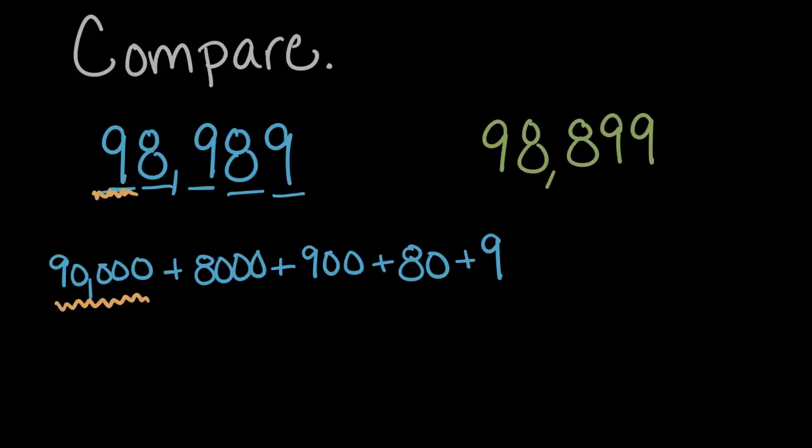So when we compare these numbers, we're going to start by comparing the largest place value that either of them has. In this case, ten thousands is the largest place value both of them has. And in both cases, it's a nine. So both of these numbers start with 90,000, which is equal. We can't tell yet which one is greater, so we're going to move to the next biggest place value.